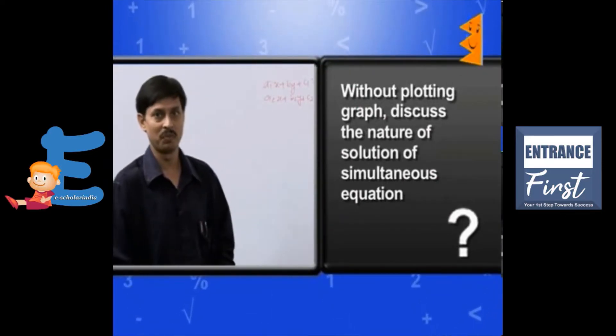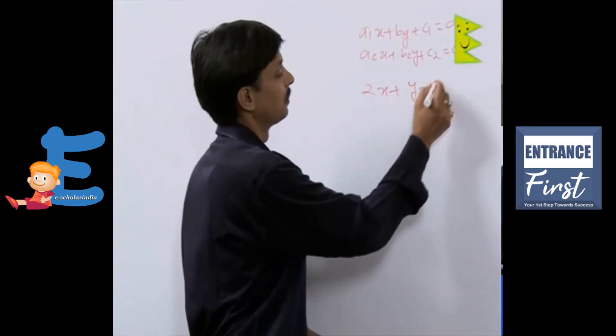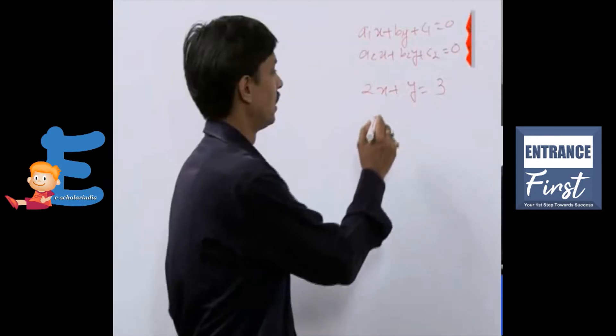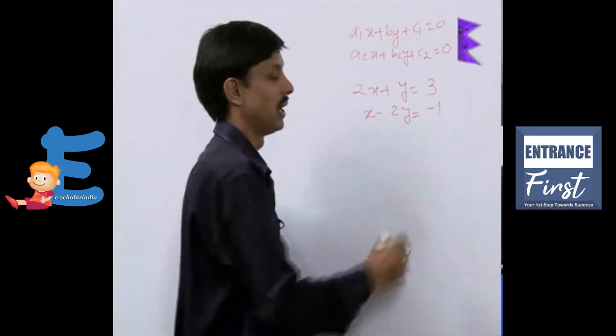I am taking one example. If it is 2x plus y equals 3, the second one is suppose x minus 2y equals minus 1.